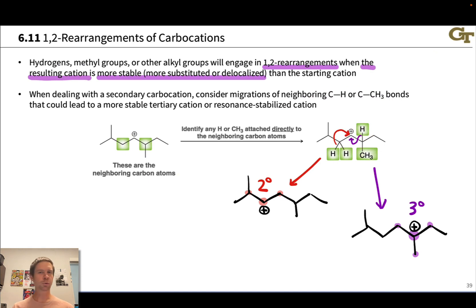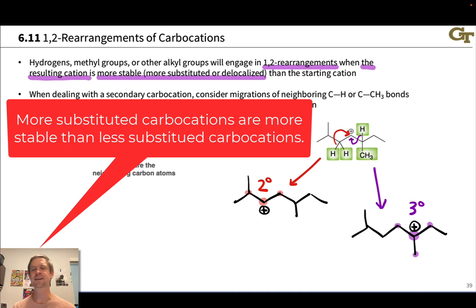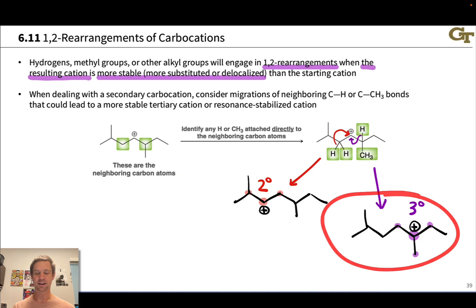Notice that this cationic center has three carbon groups connected to it. That's a tertiary carbon. Based on what we just talked about with stability trends of carbocations, we can predict the course of this rearrangement step by recognizing that the tertiary cation is going to be much more stable than the secondary. And in fact, this rearrangement in red is taking us from a secondary starting cation to a secondary product cation. So there's no big impetus for that rearrangement to occur.